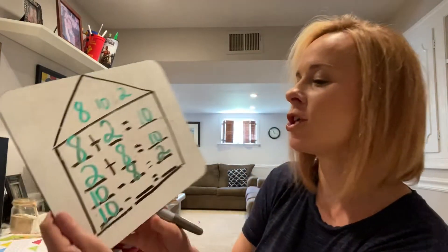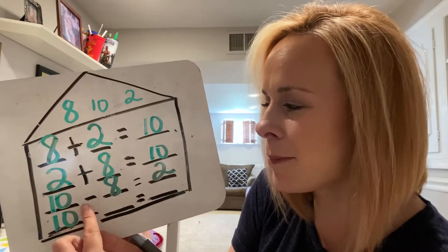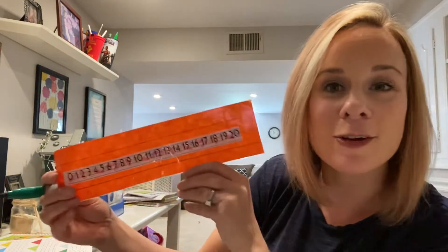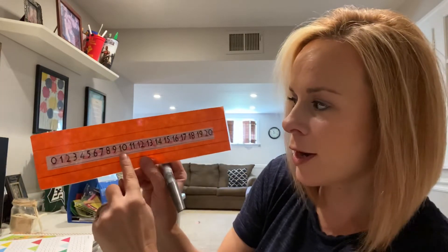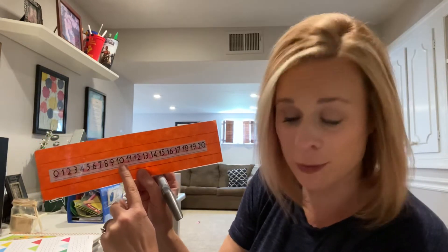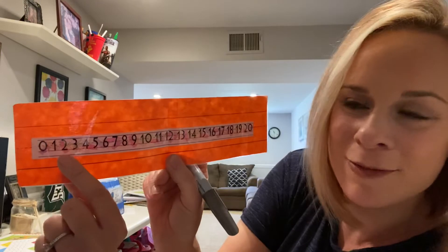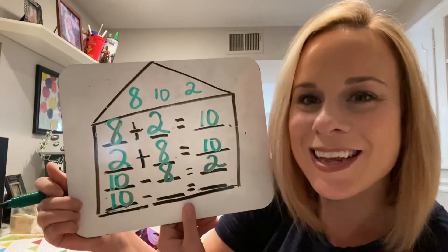Let's plug those numbers in — we have eight and two. I'm going to check by reading left to right to see if the sentence is true: 10 minus eight equals two. If you weren't sure and wanted to double check, you could always use a number line. You start at 10, and if you're subtracting eight, you count back eight. One, two, three, four, five, six, seven, eight — yes, you land on two. It is in fact two. I double checked on my number line, it's a true statement.